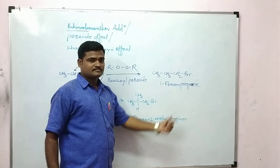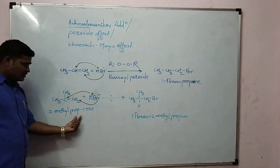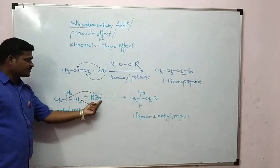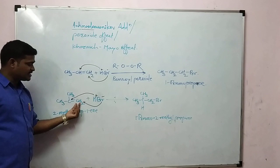Now we are taking the second example: 2-methylpropene. Here also, the negative part of the reagent, bromine, adds to that carbon which carries more hydrogen atoms, that is CH2, in the presence of the same reagent. We are getting 1-bromopropane. Thank you.